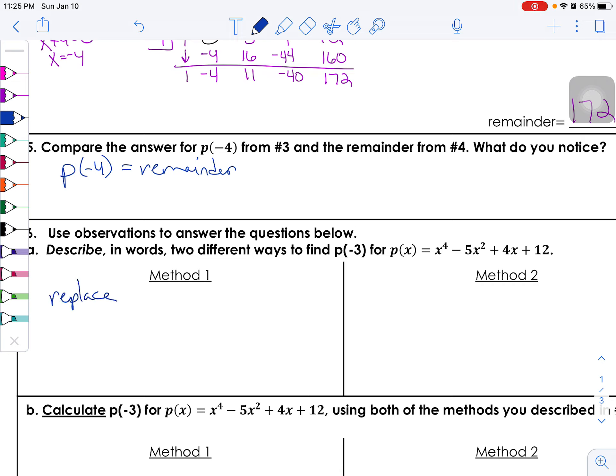So describing in words two different ways to find p of negative three—now I'm not going to be very specific in terms of using sentences, but in terms of describing words—you could replace x with negative 3 in p(x). Okay, so that would be you'd want to find p of negative three by replacing every single one of the x's with a negative three: negative three to the fourth minus 5 times negative three squared plus four times negative three and then plus 12.